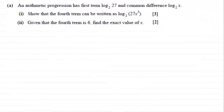Hi there, now in this question we're given that an arithmetic progression has first term log in base 2 of 27, and a common difference of log in base 2 of x. And what we've got to do in the first part is show that the fourth term can be written as the log in base 2 of 27x cubed.